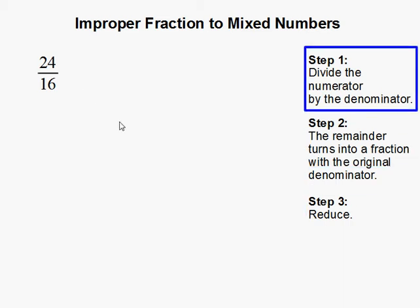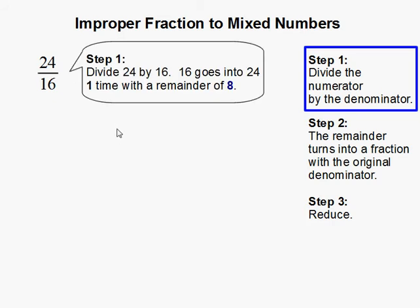Step 1. Divide the numerator by the denominator, and that means we are going to divide 24 by 16, and 16 goes into 24 one time with a remainder of 8.